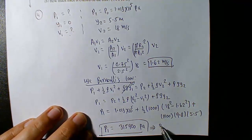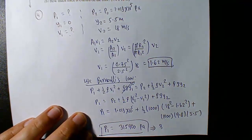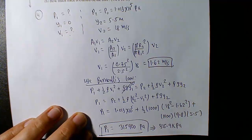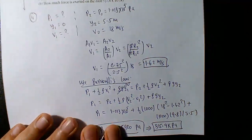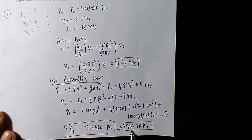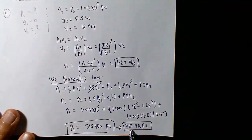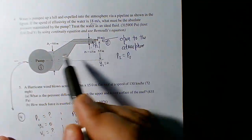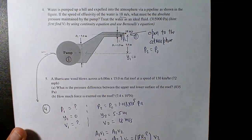The pump must provide about 315,900 Pascals, or approximately 316 kilopascals of pressure to maintain the constant flow rate.